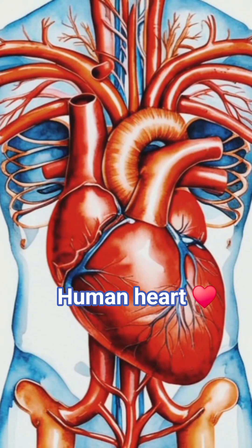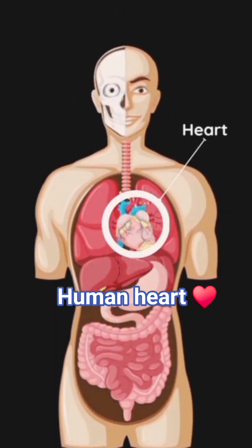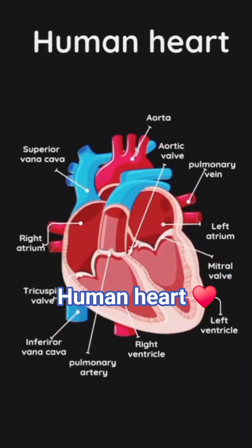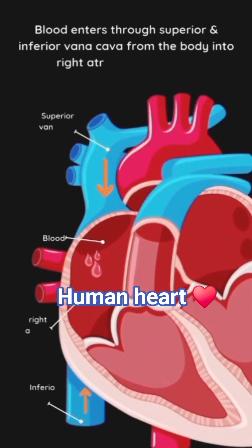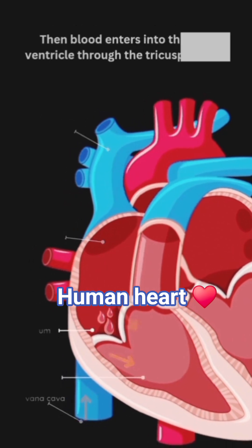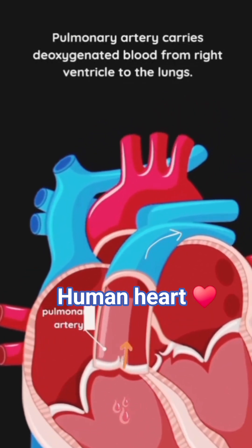Your body's superhighway is always on from head to toe. Let's meet the circulatory system — the location of the heart and parts of the human heart. Blood enters through the superior and inferior vena cava from the body into the right atrium of the heart, then into the right ventricle through the tricuspid valve. The pulmonary artery carries deoxygenated blood from the right ventricle to the lungs.